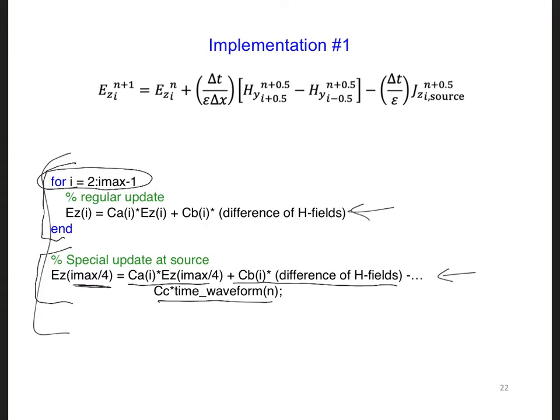Here is i max over 4, which should be also included in this loop. So if you double update the soft source this way, your code will go unstable.